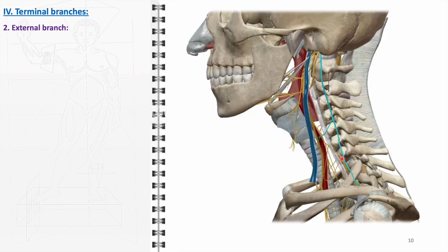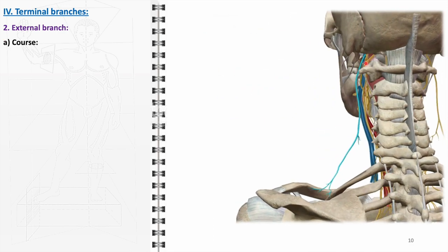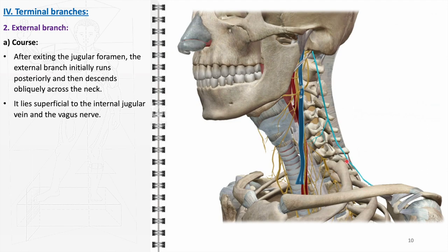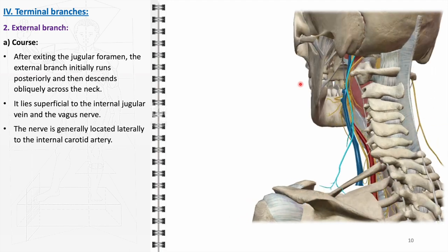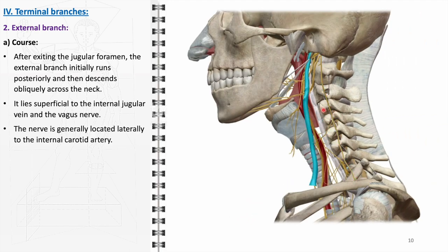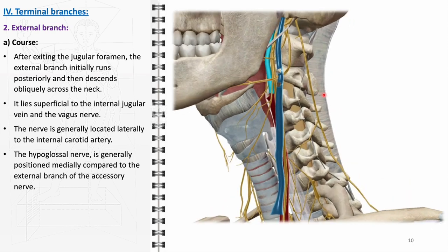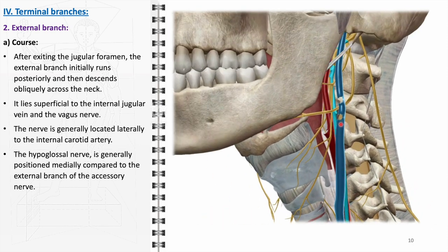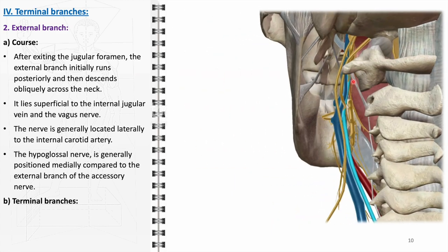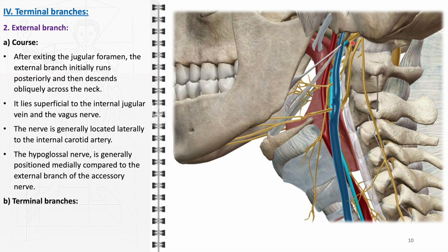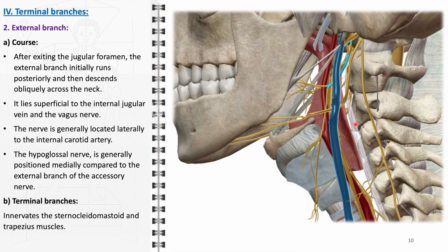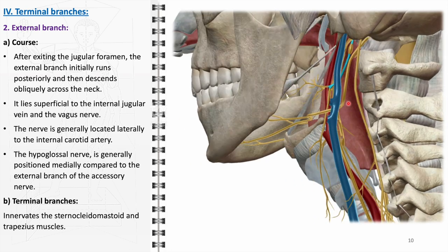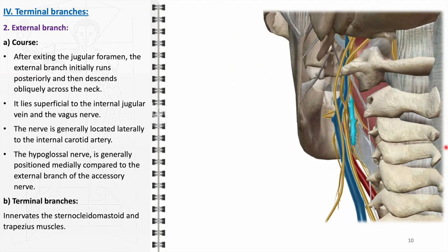The external branch of the accessory nerve, also known as the spinal part, has a distinctive course and terminal innervation in the neck. Upon exiting the jugular foramen, the external branch initially runs posteriorly, descending obliquely across the neck, lying superficial to both the internal jugular vein and the vagus nerve, making it relatively more vulnerable to injury. The nerve is generally positioned laterally relative to the internal carotid artery and maintains a more lateral trajectory than the hypoglossal nerve. The primary function of the external branch is the motor innervation of the sternocleidomastoid and trapezius muscles.